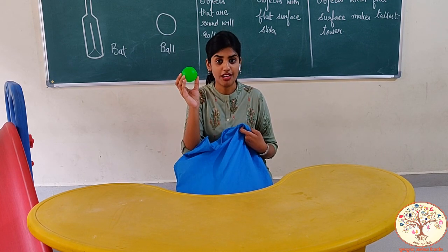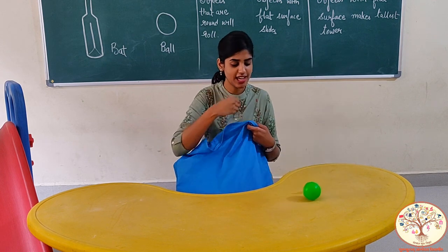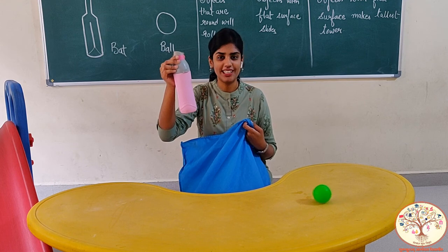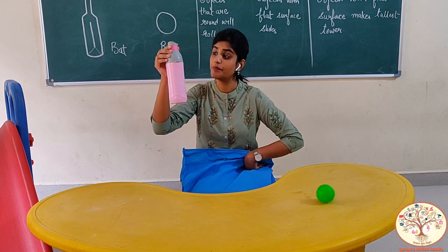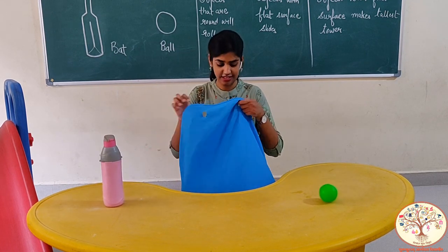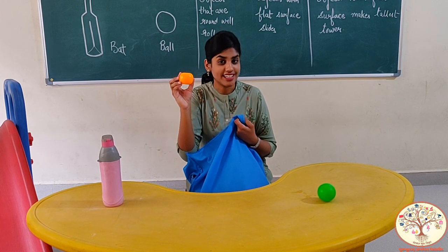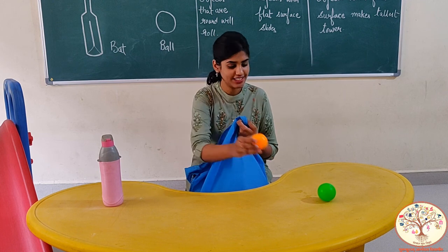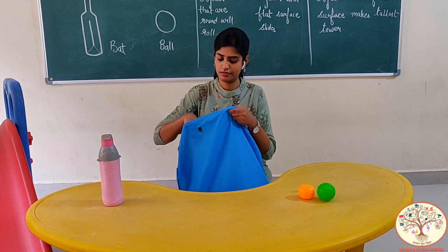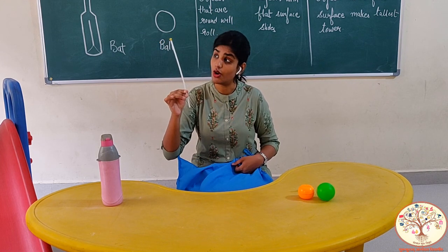A ball — ball is round. Bottle — bottle is long. An orange — orange is round. A stick — a stick is long.